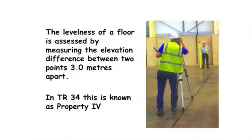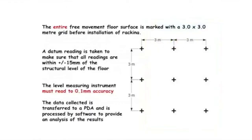The other aspect is levelness — this is the pain in the backside but this is the way it's done. You need to set up a grid over the entire building. If you've got 90,000 square meters you have to set up a three meter by three meter grid, and first of all pick up where your datums are so you have a baseline.